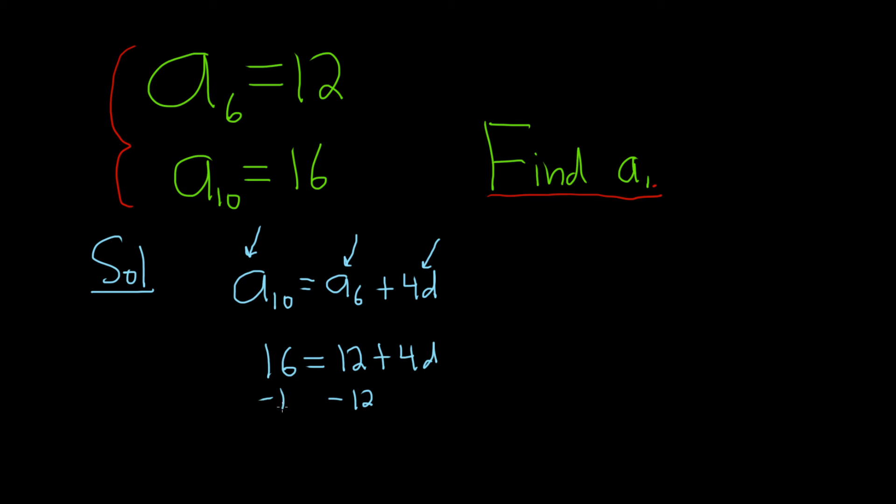Now we can subtract 12 from both sides, minus 12, minus 12, that gives us 4 equals 4d. Finally we can divide by 4, and so we have that d is equal to 1.